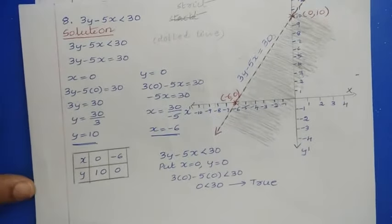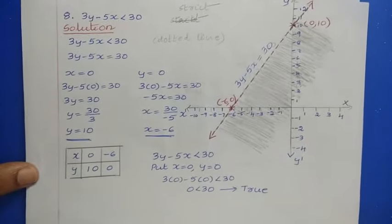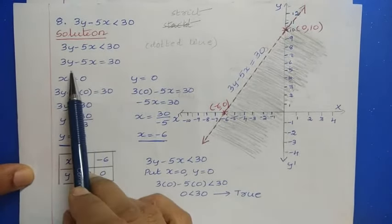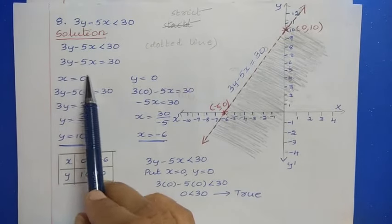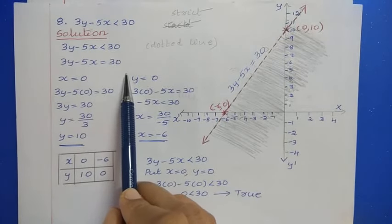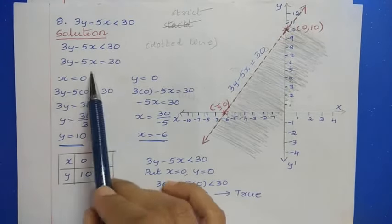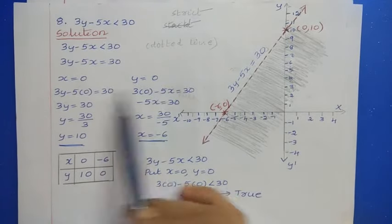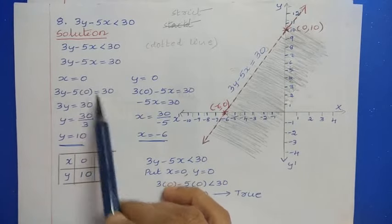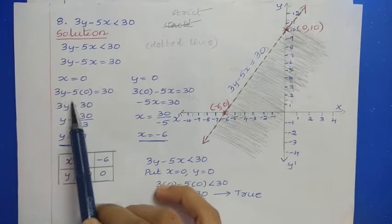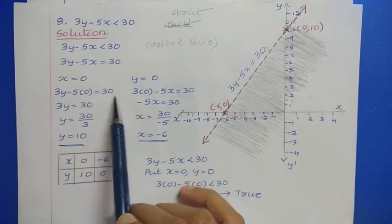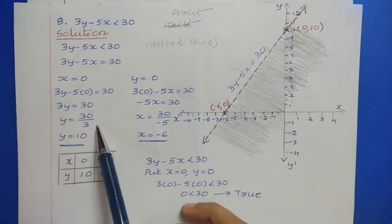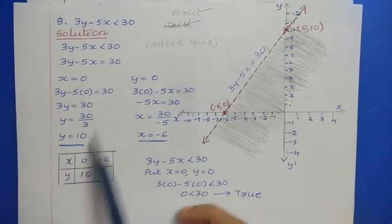Question number 8: 3y - 5x < 30. First convert to equality: 3y - 5x = 30. Putting x = 0 gives 3y = 30, so y = 10.